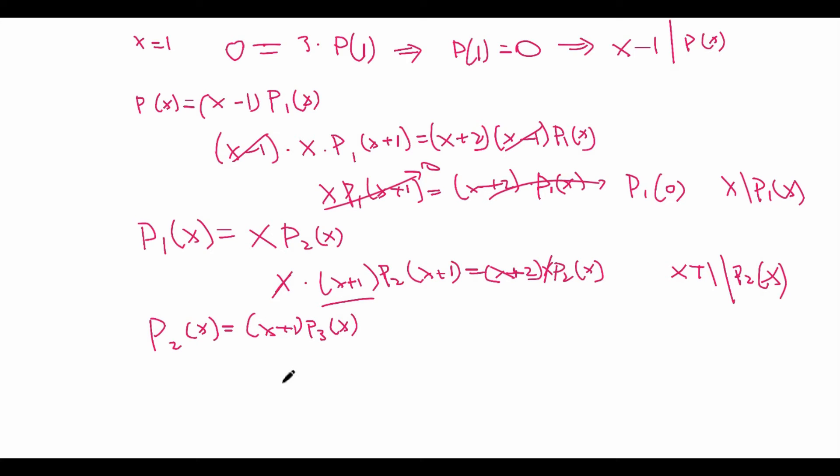And now plugging this in, we have that the x is here canceled out, so that means we have (x+1) times (x+2) times P₃(x+1) equals (x+2) times (x+1) times P₃(x). Now we note that x+1 and x+2 cancel out with (x+2) times (x+1), so we're left with P₃(x+1) is equal to P₃(x).